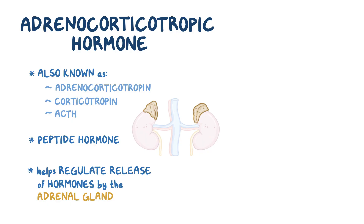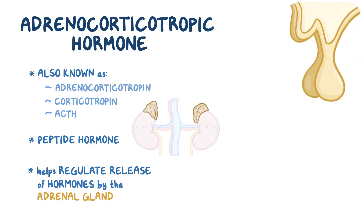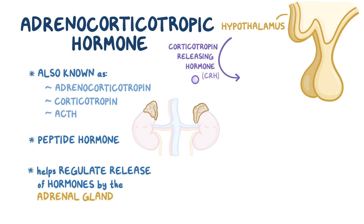Secretion of ACTH is dependent on the hypothalamic-pituitary axis. The hypothalamus, which is at the base of the brain, secretes corticotropin-releasing hormone, or CRH, into the hypophysial portal system, which is a network of capillaries linking the hypothalamus to the anterior part of the pituitary gland.